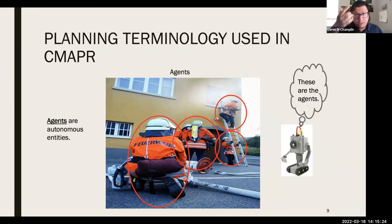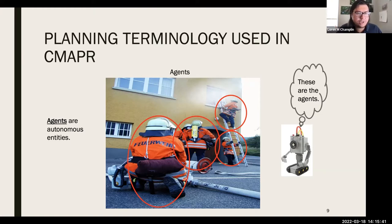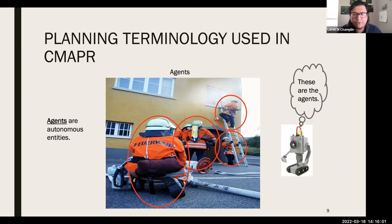Now I'll go over some terminology used in cooperative multi-agent plan recognition — most of it is used in plan recognition generally, and a lot comes from automated planning research. First, we have agents: autonomous entities, meaning each person is self-governed. They can do their own individual actions and work individually from others, which doesn't preclude them from doing group or joint tasks — it's just that each person can decide whether to participate in a group task.